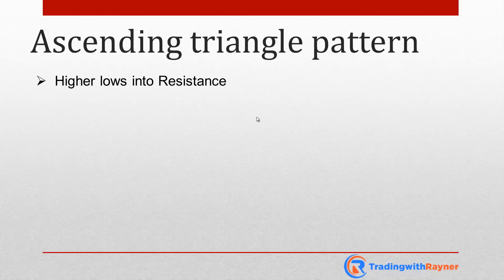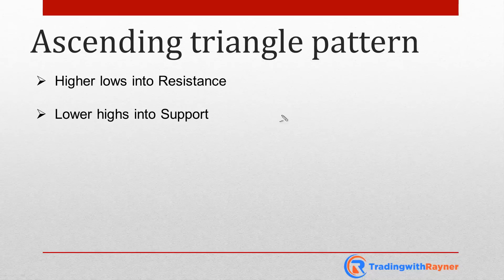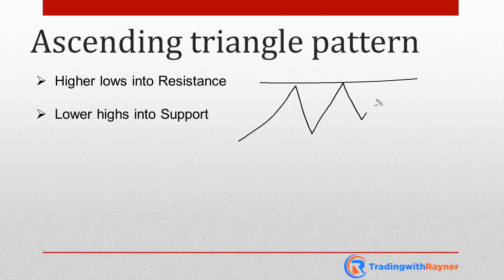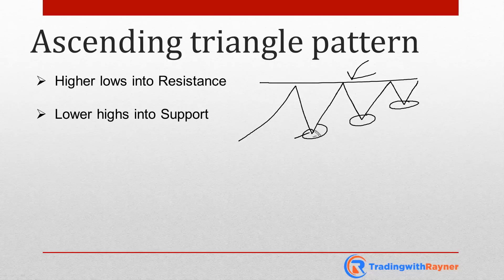Number one, an ascending triangle is pretty much where you see higher lows into resistance. A descending triangle is the opposite — it's where you see lower highs into support. Visually, an ascending triangle looks something like this: this is resistance, and you can see the price making higher lows into resistance. You can connect the lows and it forms an ascending triangle shape.